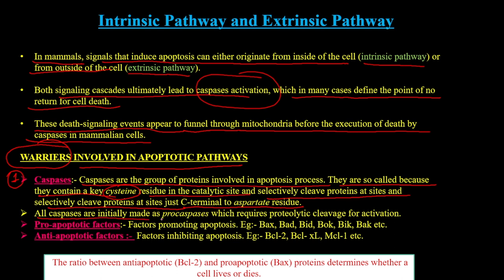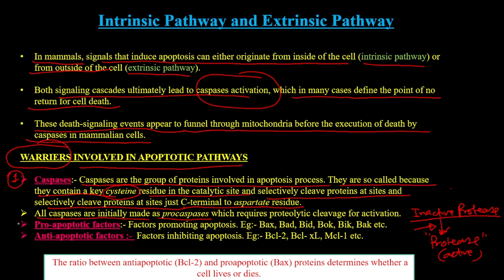All caspases are initially made as pro-caspases, meaning they are produced as inactive proteases and ultimately generate the active protease. This keeps them under fine control — the cell contains inactive proteases which, upon receiving the signal, convert to active protease to start the cascade of reactions. We also have pro-apoptotic factors — factors that promote apoptosis such as Bax, Bad, Bid, Bak, Bik, Bac — and anti-apoptotic factors that inhibit apoptosis, such as BCL-2, BCL-XL, MCL-1A.